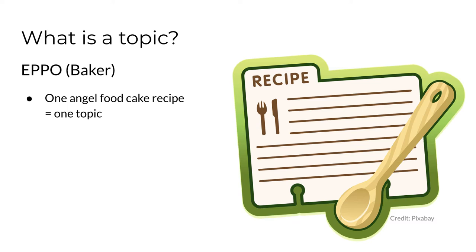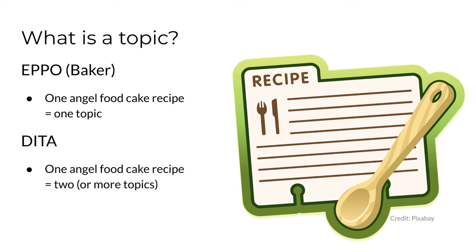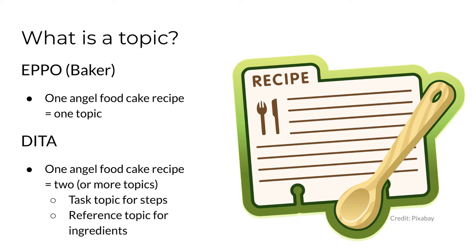So it's critical that a reader gets everything they need in a single topic. In contrast, DITA would likely break a single recipe into at least two topics. There'd be the portion with the steps for making the angel food cake — that would be one topic — and then the list of ingredients would be a separate topic. In reality, the reader might never know, because the two topics would be combined into the same page in a book or on a website, but underneath they'd be separate building blocks.